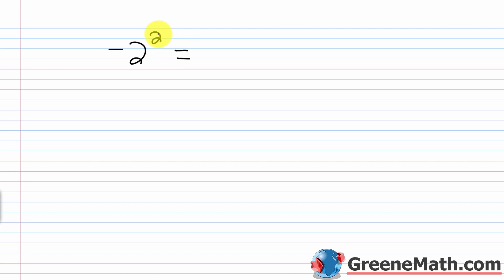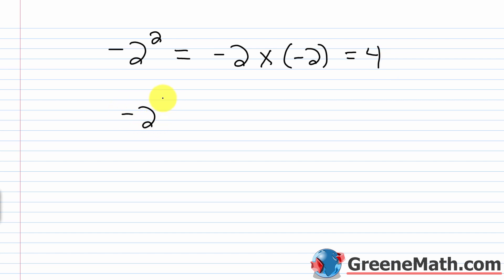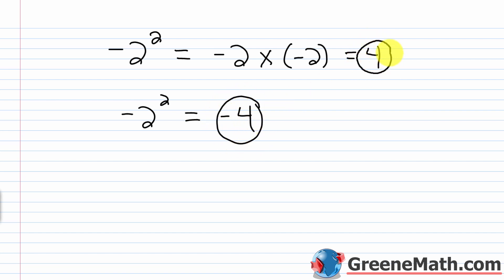Let's think about this using an example. Suppose your teacher asks: what is negative 2 squared? You write negative 2 squared without parentheses, and from your knowledge of exponents you say you have two factors of negative 2, so negative 2 times negative 2 equals 4. Then you pull out your calculator, type in negative 2 to the power of 2, and the calculator gives you negative 4. You're thinking — what gives? Why did the calculator say negative 4 when I got positive 4?